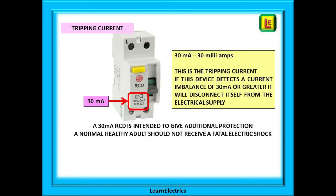When we talk about a 30 milliamp RCD we are referring to the tripping current of the device. If the RCD detects a difference in the circuit of 30 milliamps or more then it will trip and disconnect itself from the electrical supply. A 30 milliamp RCD is intended to give additional protection to users of the installation as they can operate at much lower fault currents than the standard circuit breakers.